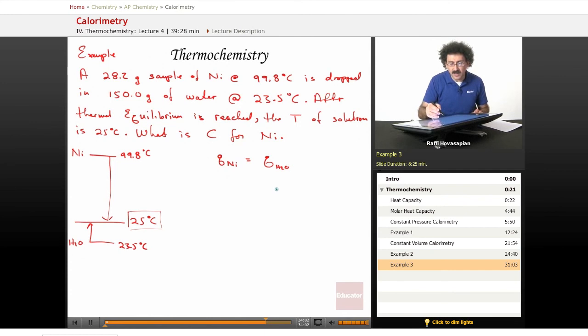I'm going to run this calculation one way, and then I'm going to do something slightly different. At the end I'm going to talk about this little negative sign that's going to show up out of nowhere. So q of nickel is mc delta t and q of H2O is mc delta t.